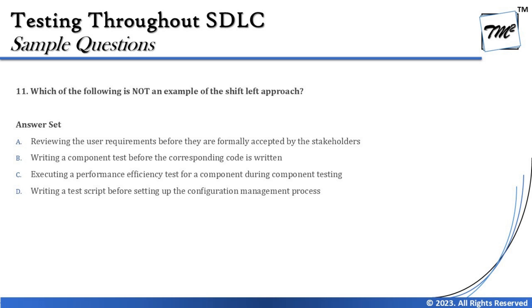Option A says: reviewing the user requirements before they are formally accepted by stakeholders is an example of shift left. Shift left means doing something before its scheduled timeline — preponing the activity in the lifecycle — which helps identify defects early or prioritize work to manage risk in early phases. Reviewing work products before they are formalized is of course an example of shift left, because we find mistakes before they become official.